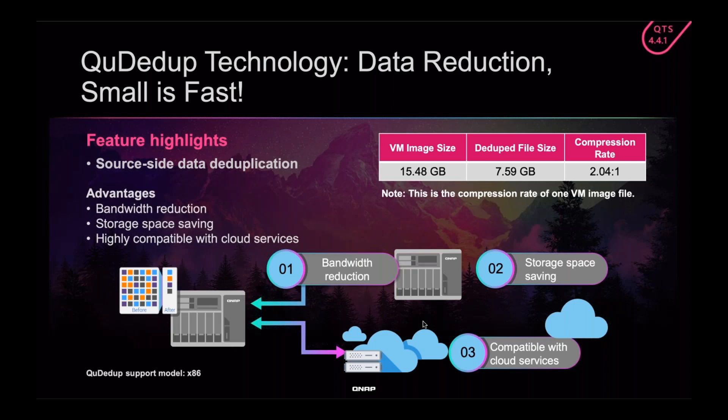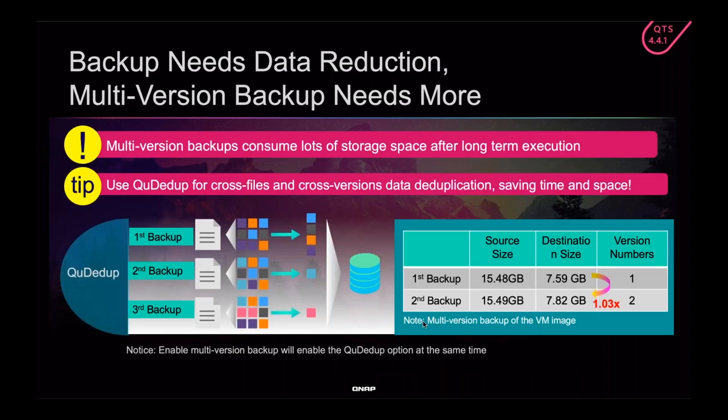We deduplicate before we send the backup through the network or internet, which means the backup happens faster and takes up less bandwidth because you don't have to send as much data. Also, because of our deduplication, backup with versioning is now much more effective — you can have thousands of versions without taking up huge amounts of space. That's because if you have many very similar versions of the same file, almost all the blocks between the files can be deduplicated.